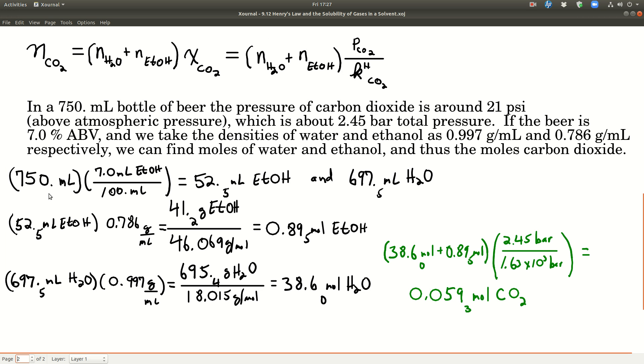We have 750 milliliters of beer. It's 7% ethanol by volume, which means we have about 52, 53 milliliters of ethanol, and 750 minus 52.5 is 697.5 milliliters of water in there. Taking the volume of ethanol and using the density, we find that we have this many grams of ethanol in that bottled beer. Divided by the molar mass of ethanol gives us the moles of ethanol, which is what we need right here.